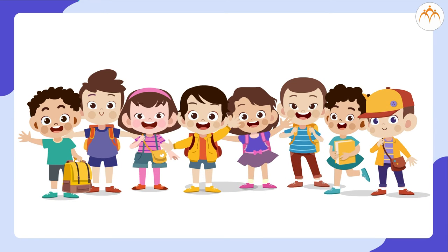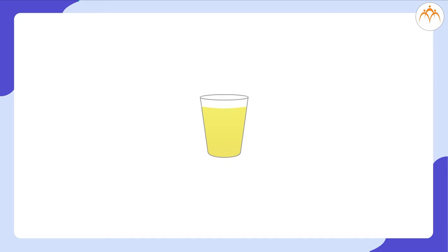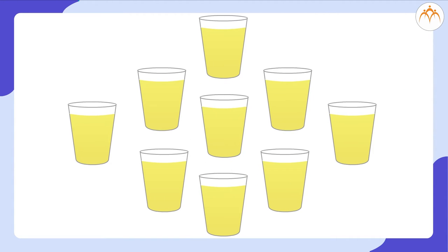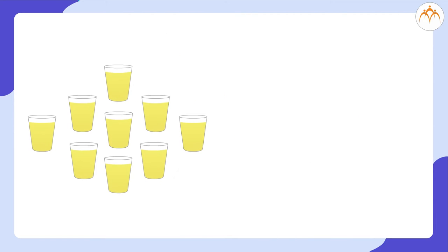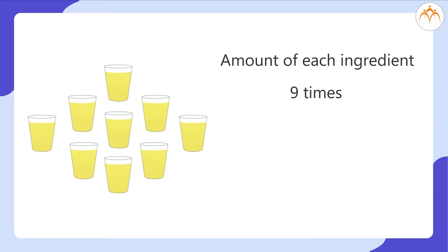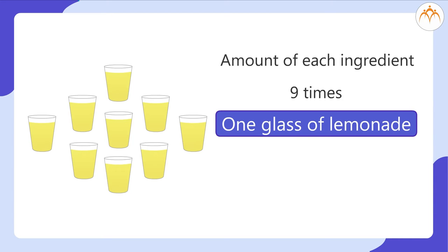You have invited eight of your friends at home and wish to make lemonade for them. You have to make nine glasses of lemonade — one for you and eight for your friends. For that, you need to take the amount of each ingredient nine times the amount needed to make one glass of lemonade.